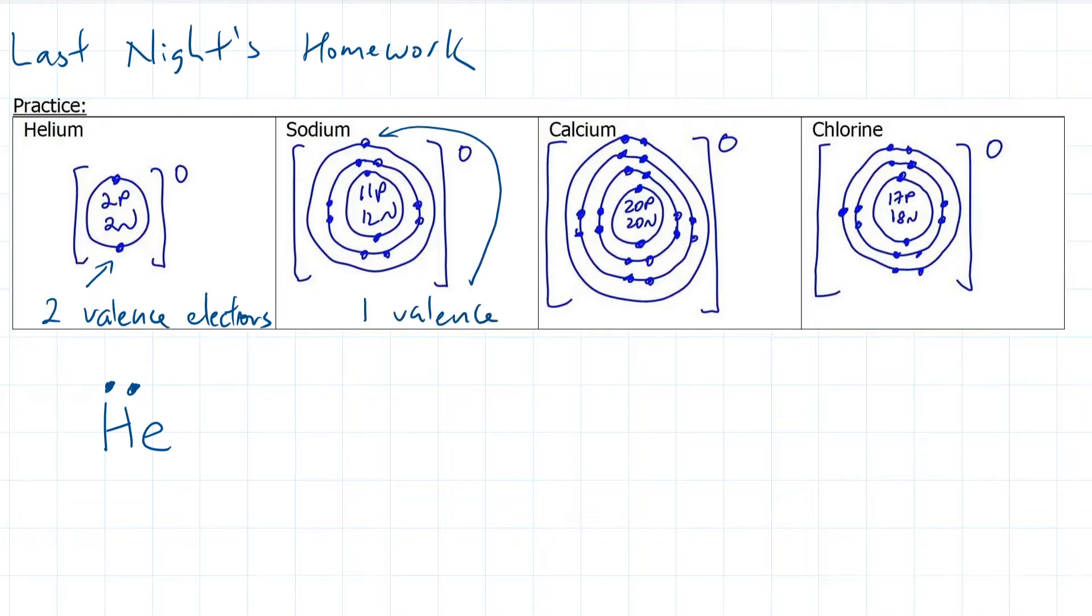Sodium has one valence electron, so its Lewis dot diagram is Na with one dot on top. Calcium has two valence electrons, so it's Ca with two dots on top. Chlorine has seven valence electrons, so it's Cl with seven dots spread around in pairs. Electrons usually like to orbit in pairs, but we'll save that adventure for grade 11.